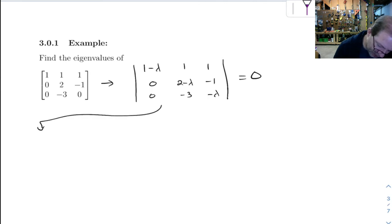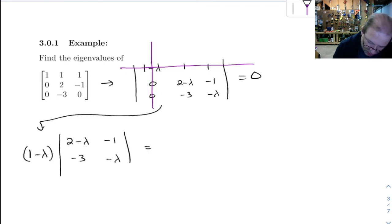So this is going to be 1 minus lambda times the smaller matrix we get when we delete those. So the smaller matrix is going to be 2 minus lambda, negative 1, negative 3, minus lambda.